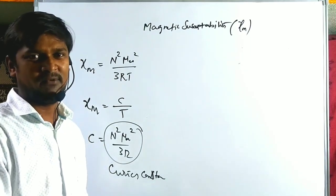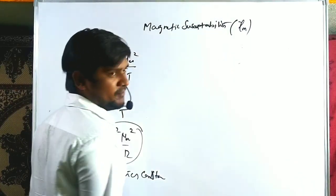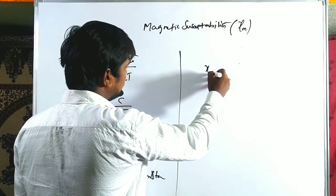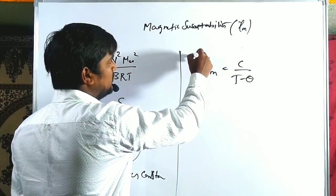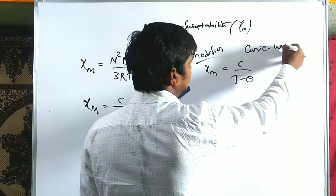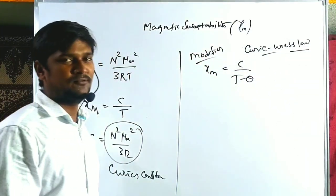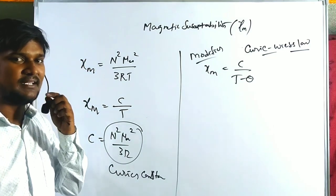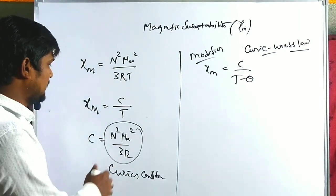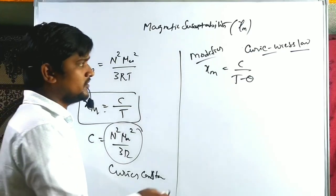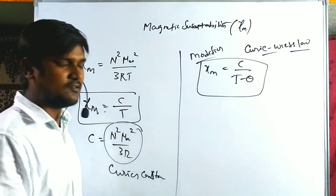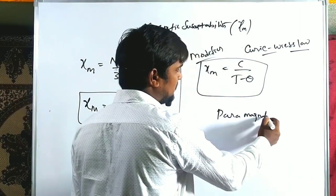Substances are classified into two types: paramagnetic and diamagnetic. Instead of T, we can use another constant, giving χm equals C divided by (T minus θ), which is the modified Curie theory — the Curie-Weiss law. These two theories are very helpful to predict the magnetic properties or magnetization of complex compounds or any other charged species. This is Curie's law: χm equals C by T. Both theories are used only for paramagnetic species, not diamagnetic species.